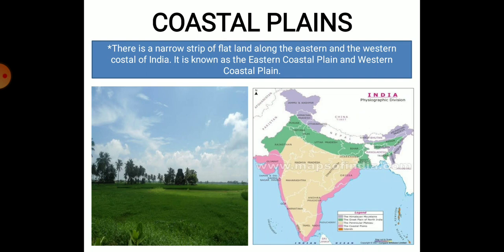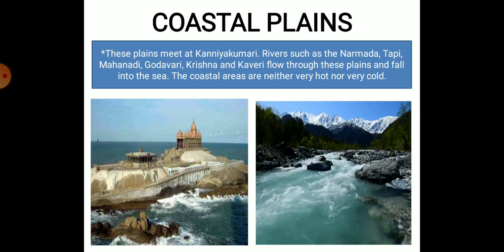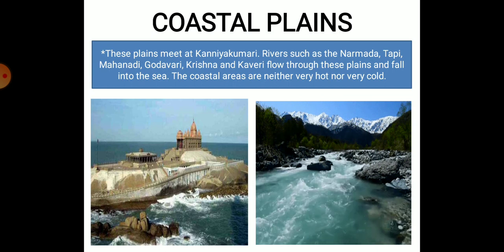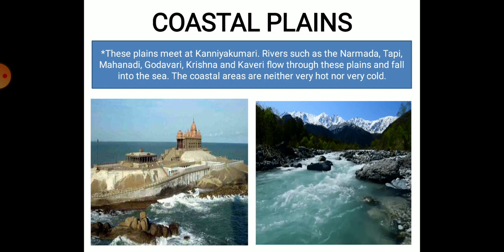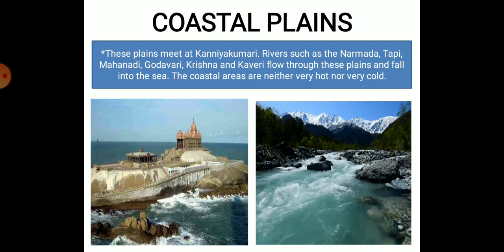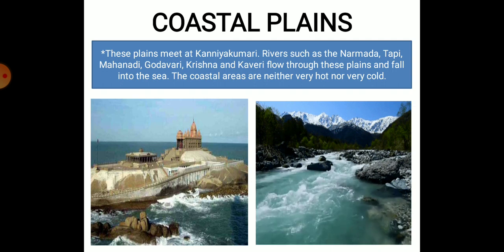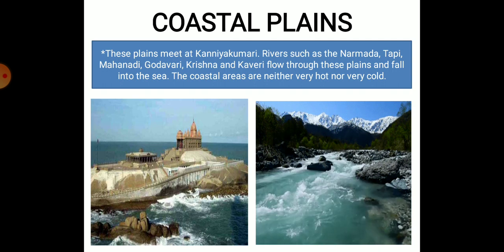It is known as the eastern coastal plains and the western coastal plains respectively. These plains meet at Kanyakumari. Rivers such as the Narmada, Tapti, Mahanadi, Godavari, Krishna and Kaveri flow through these plains and fall down into the sea. The coastal areas are neither very hot nor very cold.